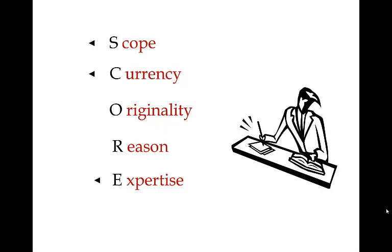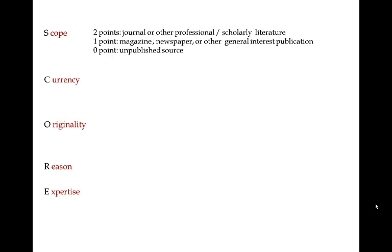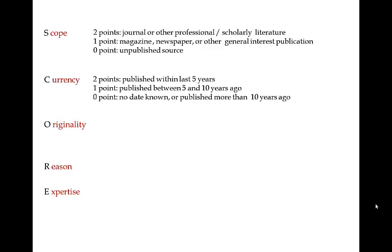Use these same criteria to assess all sources being considered, whether the format is a book, article, website, or another format. An assessment scale has been developed to score each resource you consider — two points for each factor. For scope, consider the type of publication and the intended audience: two points for a journal or other professional literature, one point for a magazine, newspaper, or other general publication, and no points for an unpublished source. For currency, two points if published within the last five years, one point if published between five and ten years ago, and zero points if published more than ten years ago or if no date is known.